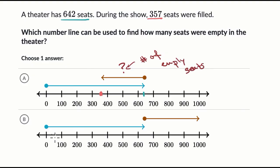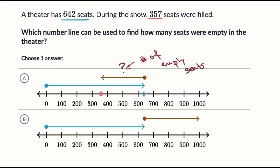Let's look at the other choice. This one starts at 642 and then it looks like it's adding 357 to that. Well, that's not what we're talking about. It's not that these 357 seats were filled on top of the 642 — it's that 357 of the 642 are filled, and then there's some amount that is empty. So if we figure out how much we have to go back from 642 to get to 357, that tells us the number of empty seats. I like choice A.